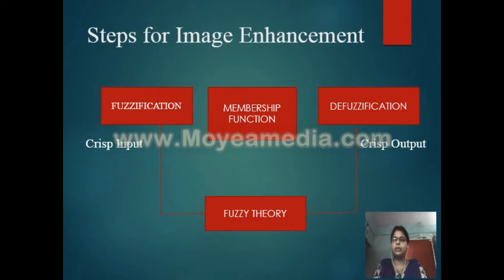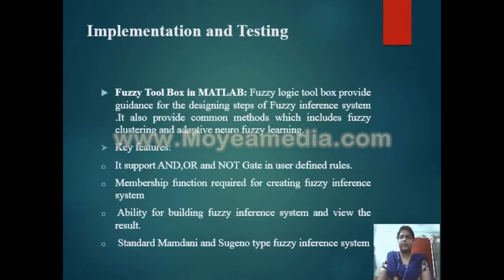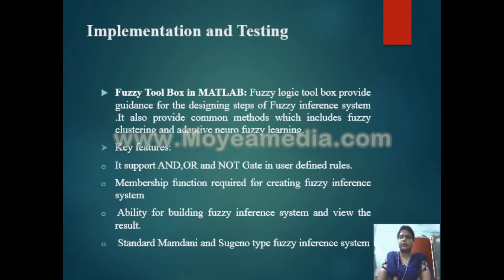We have different types of membership functions: triangular membership function, trapezoidal membership function, and Gaussian membership function. We use these membership functions according to their usability. Mapping is done with the help of membership functions for images of size M×M, where M represents rows and columns of gray level images. Each element in the array has a membership function and can represent a degree of brightness of the gray level. The working platform is MATLAB, and we use the fuzzy toolbox from MATLAB. The fuzzy toolbox supports all gates — AND, OR, NOT — and membership functions required for creating a fuzzy inference system. In Simulink, a fuzzy inference system model can be embedded. It can also provide common methods including clustering and adaptive neuro-fuzzy learning.